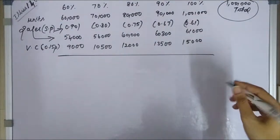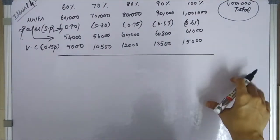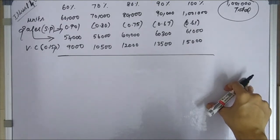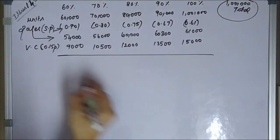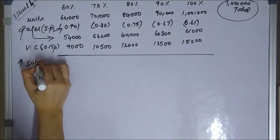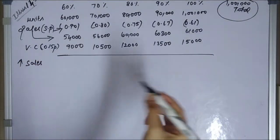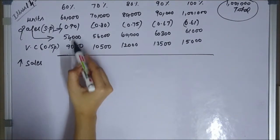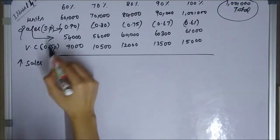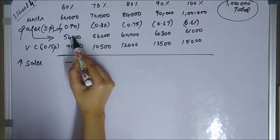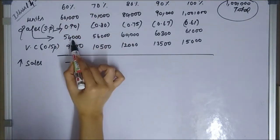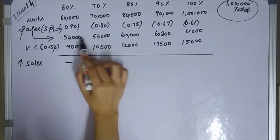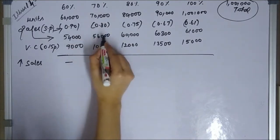Now for the incremental revenue and differential cost section. For sales, the base figure at 60% capacity is 54,000. Moving from 60% to 70% capacity represents a 10% increase, and the difference in sales revenue is 2,000, which is the incremental revenue for that stage.